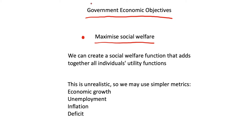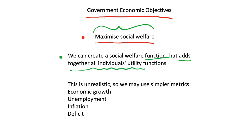What we want in an economic model is to have some sort of benevolent government — a government that actually cares about its people — so its policies are trying to increase the welfare of the whole society. How a government might go about maximising social welfare is that it could in theory come up with a function that adds together every single individual in an economy's utility function.